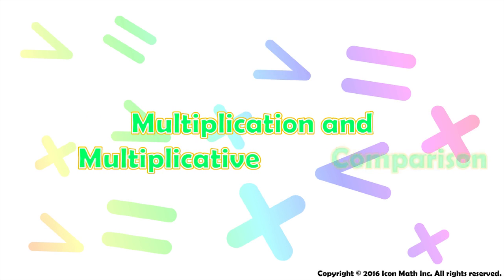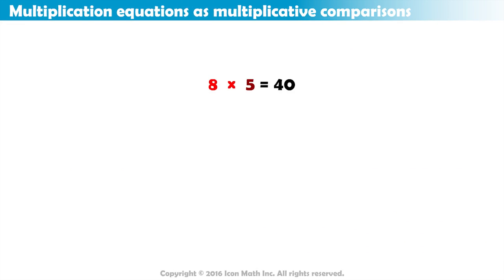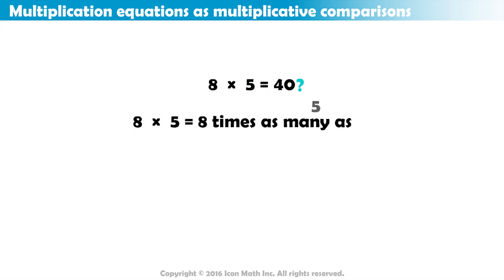Multiplication and Multiplicative Comparison. We know that 8 times 5 equals 40, but what does that mean? Well, 8 multiplied by 5 is the same as 8 times as many as 5. So, if 8 times 5 equals 40, this means that 40 is 8 times as many as 5.